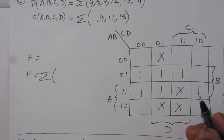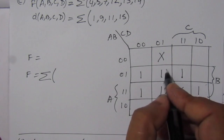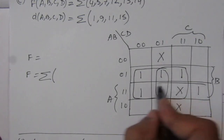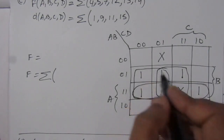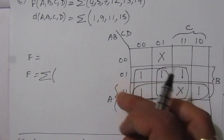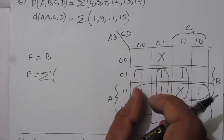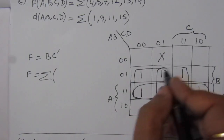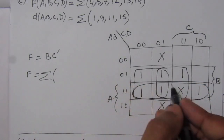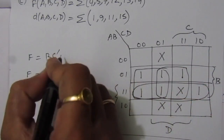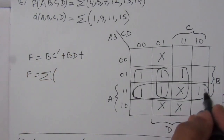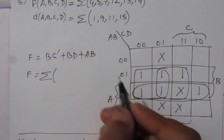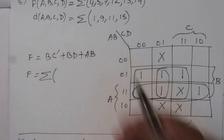Now let us find the best possible combination. We can combine like this: this will be one term, this will be another term, and this one will be the third term. From the first term, from the second and third row we get B, and from the first and second column we get C̄, giving BC̄. From the second term we get B and D, giving BD. From the third term we get AB. So the simplified Boolean expression is BC̄ + BD + AB, considering the don't care conditions.